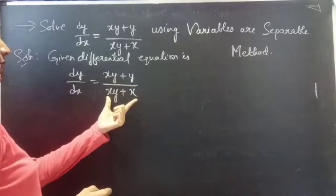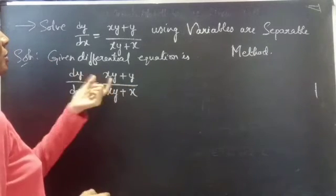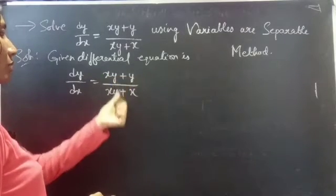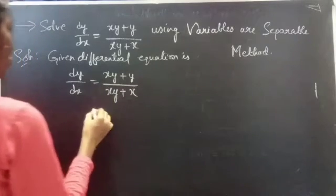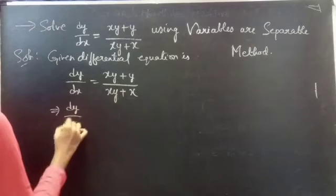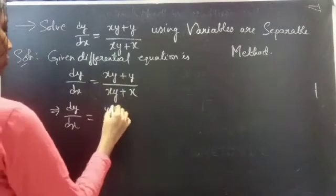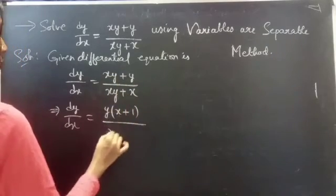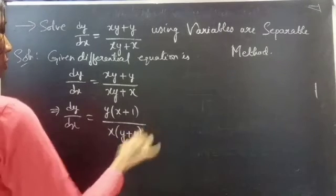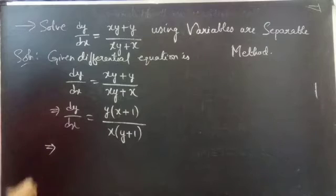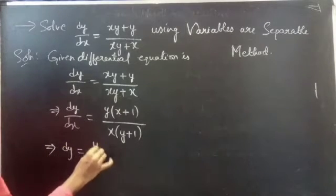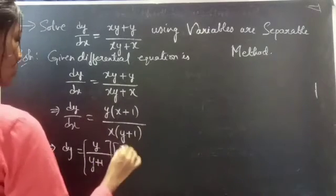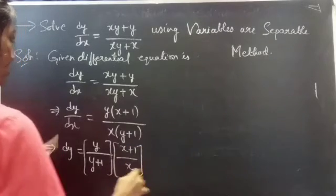In the numerator you have two terms and in the denominator also two terms. In the numerator you have y common in both terms, and in the denominator you have x common. So you can write this as dy/dx = y(x + 1) / x(y + 1). This gives dy = [y/(y+1)] · [(x+1)/x] dx.